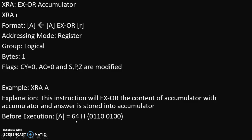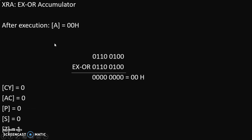We can convert 64H into binary: 6 becomes 0110 and 4 becomes 0100. You can remember this with the rule of 1, 2, 4, 8 — so 4 plus 2 is 6, and 4 is 4. So 64H is written as 0110 0100. Now if we execute XRA A, we will take XOR of the accumulator with itself — meaning XOR of 64H with 64H. Whatever the answer is, it will be stored into the accumulator. The answer will be 00H.